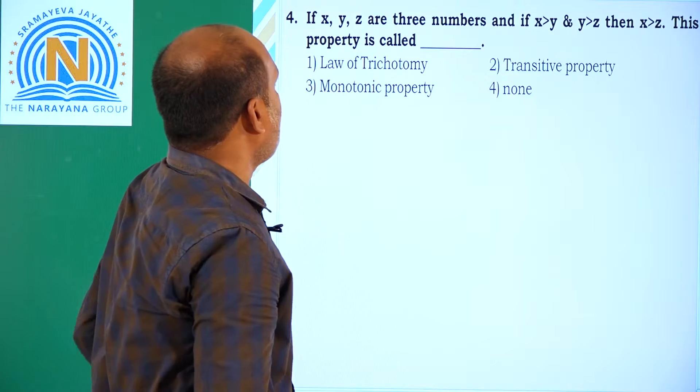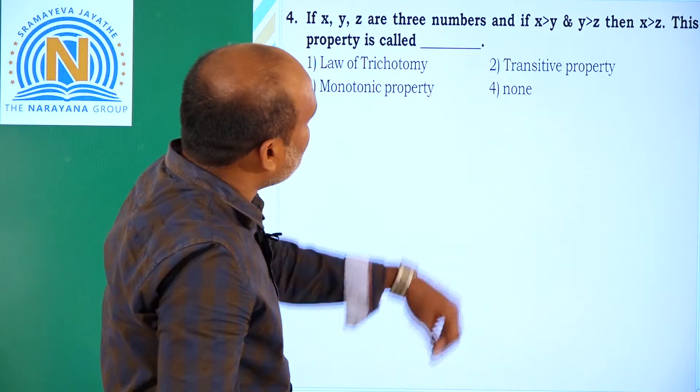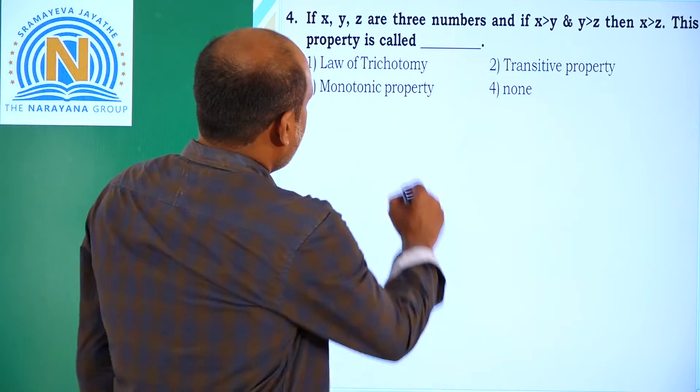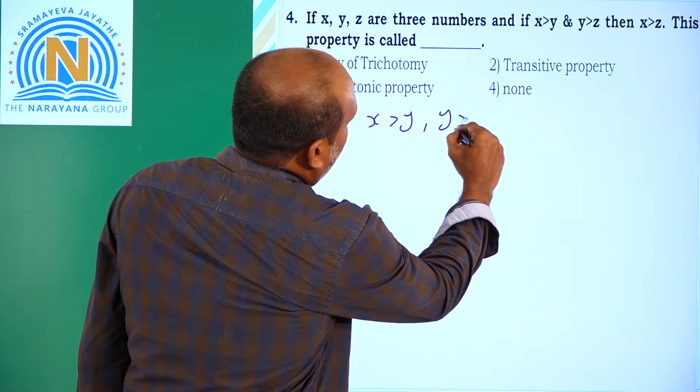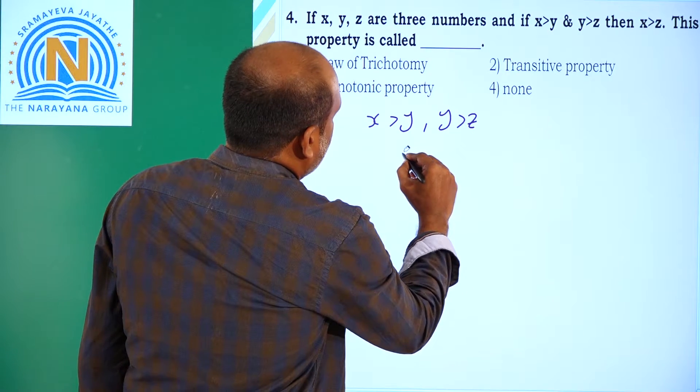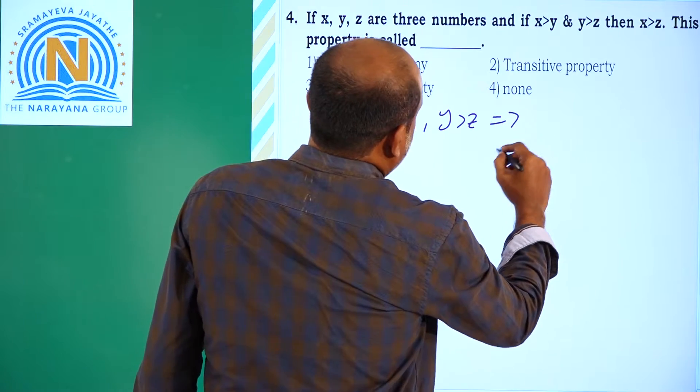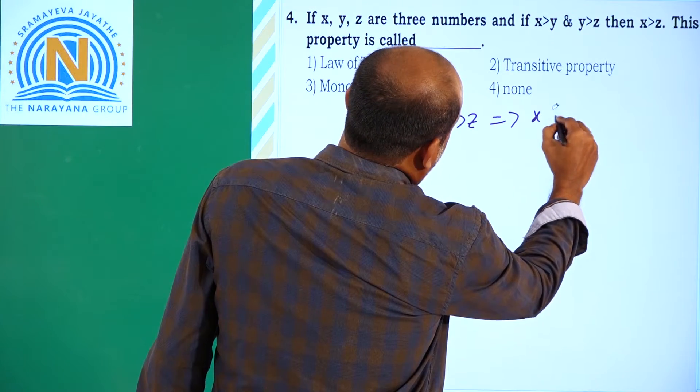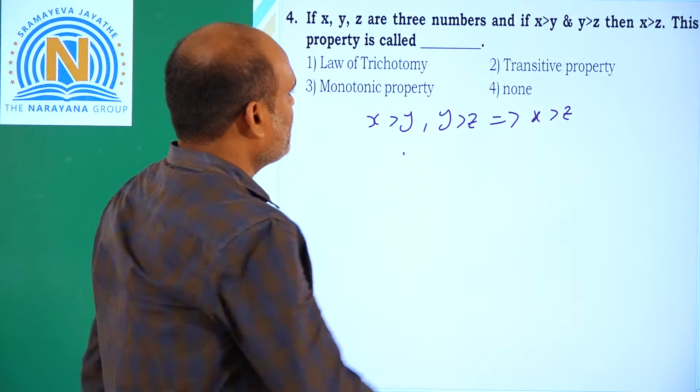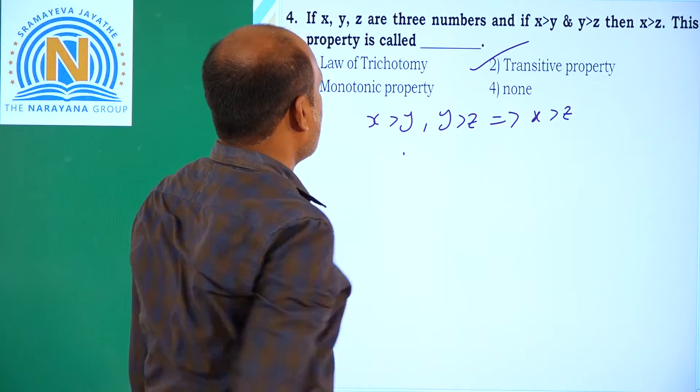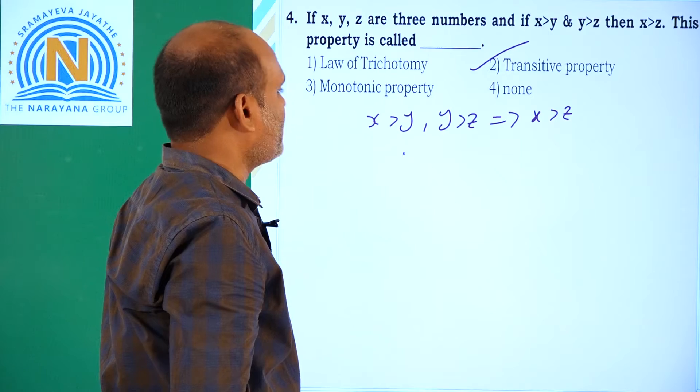Next one, if x, y, z are three numbers, and if x greater than y and y greater than z, then that implies x greater than z. This property is called transitive property. That is, option 2 is the correct answer.